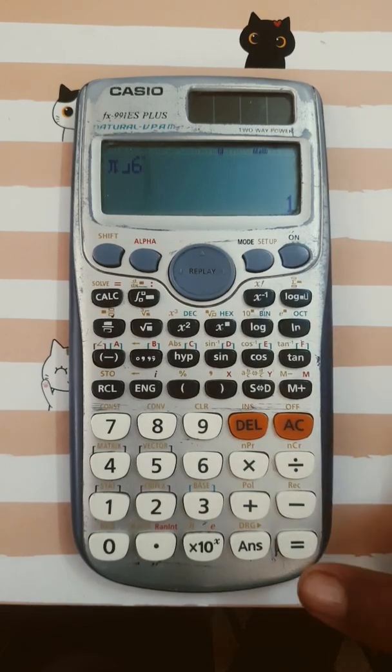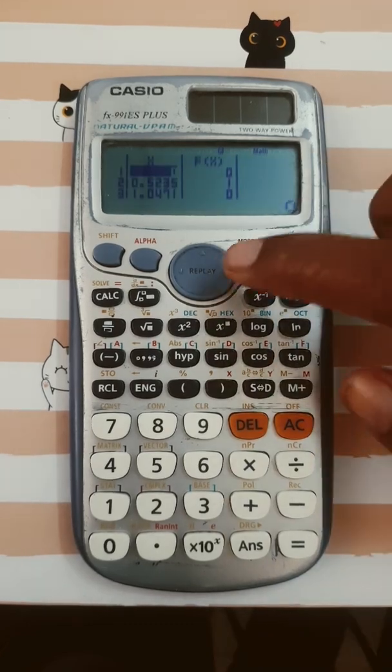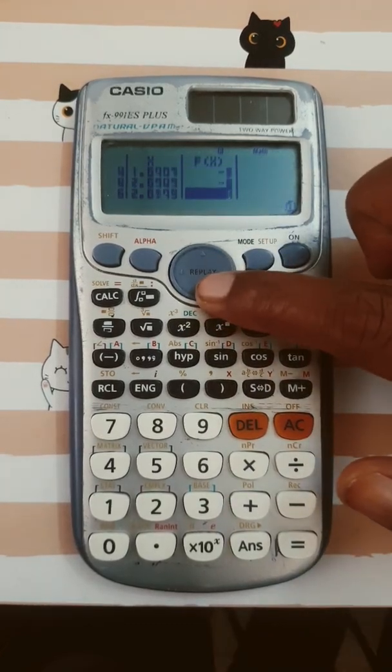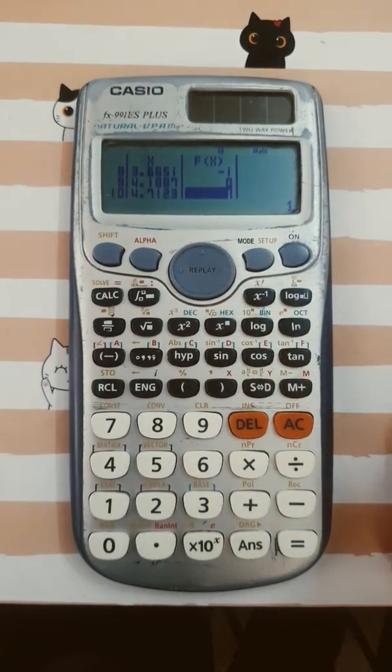Then press equals to. You get the table. Write the right-hand side values in the table and get all the values, and you will be able to trace the curve. Thank you.